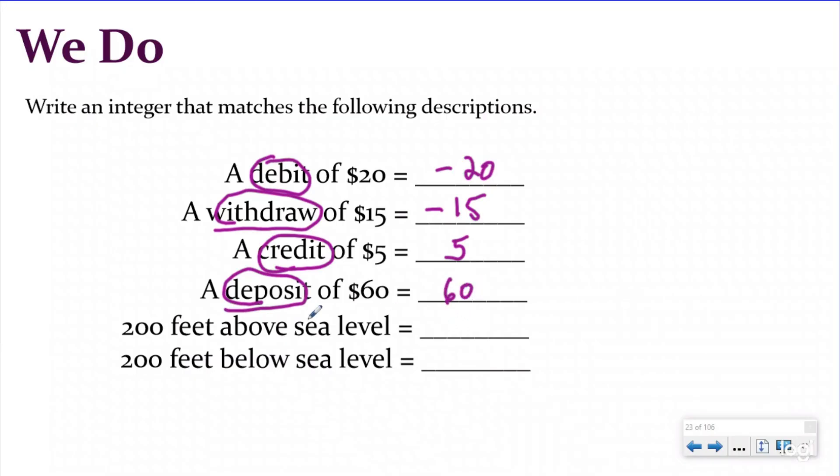And then just as a review, if I have 200 feet above sea level, that's going to be positive 200. And if I have 200 feet below sea level, that's going to be negative 200.